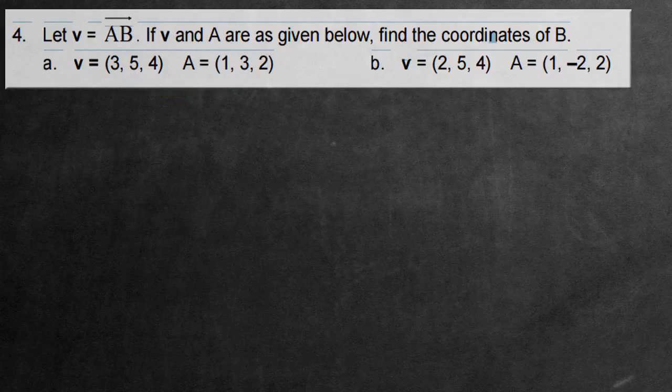The first thing we need to do is recognize how they found the directed line segment, the A to B one. They find that by doing all of the coordinates of vector B subtract the coordinates of vector A. This gives them what they titled vector V. So that equals V, and this is the logic we're going to be using here.